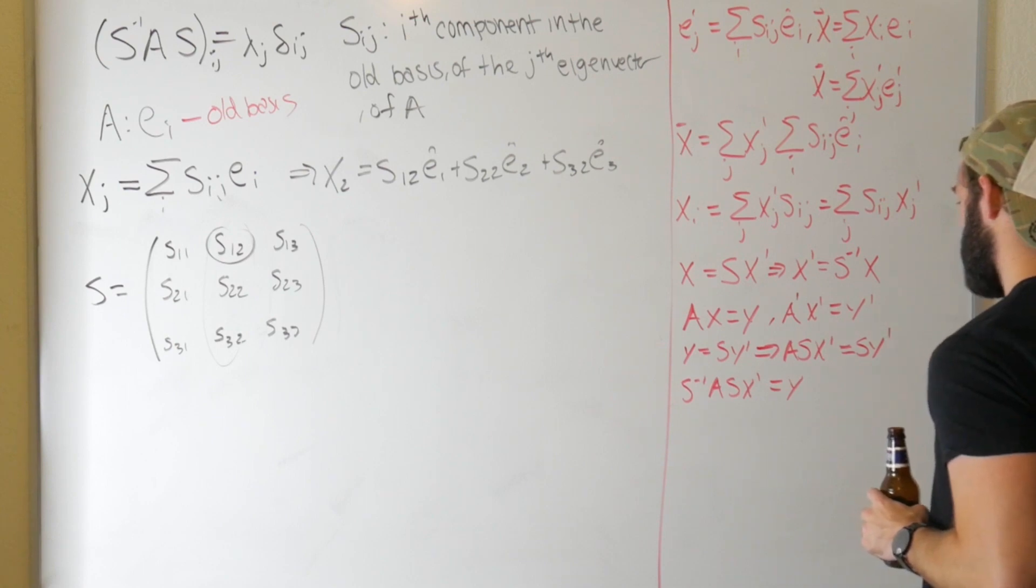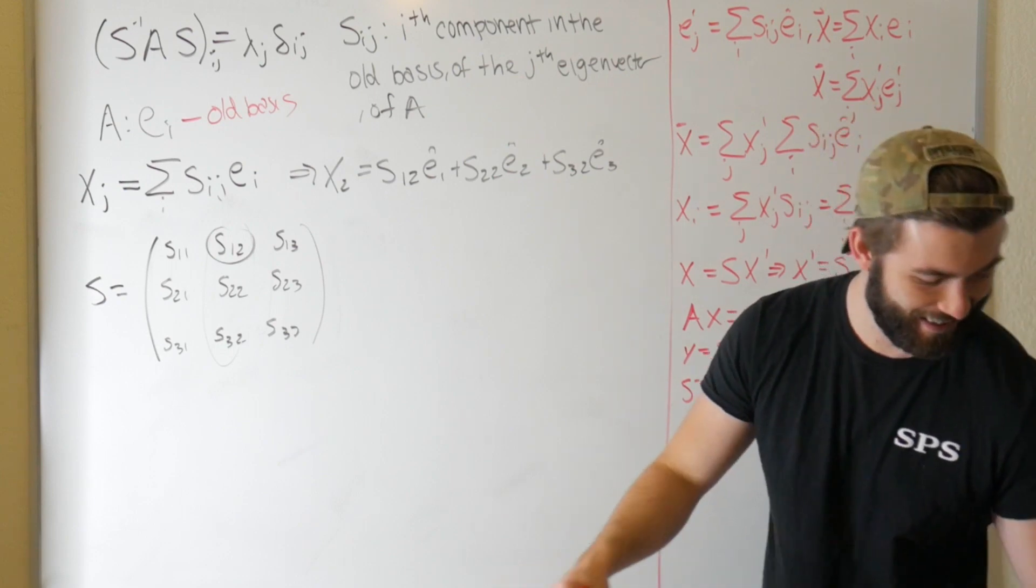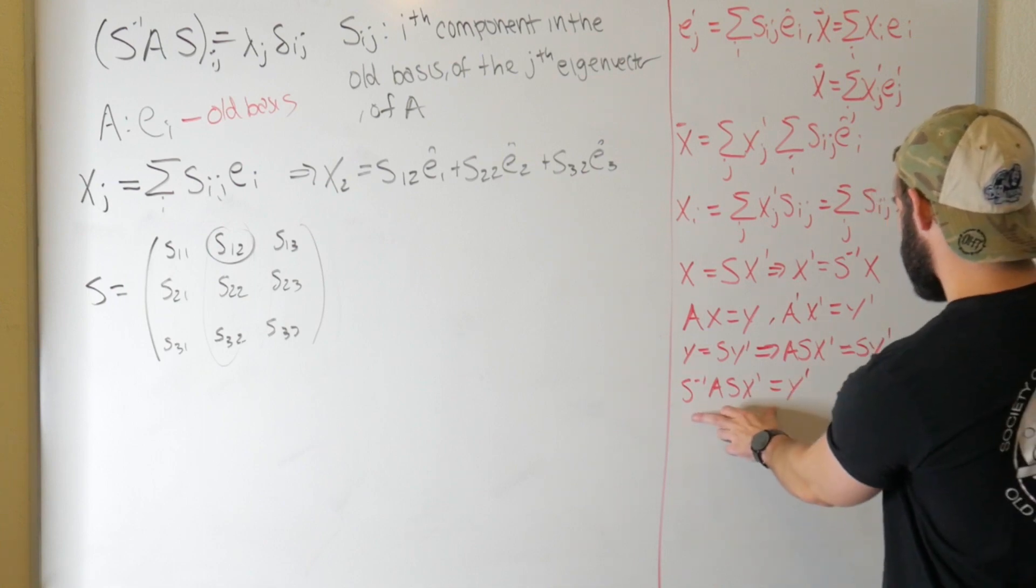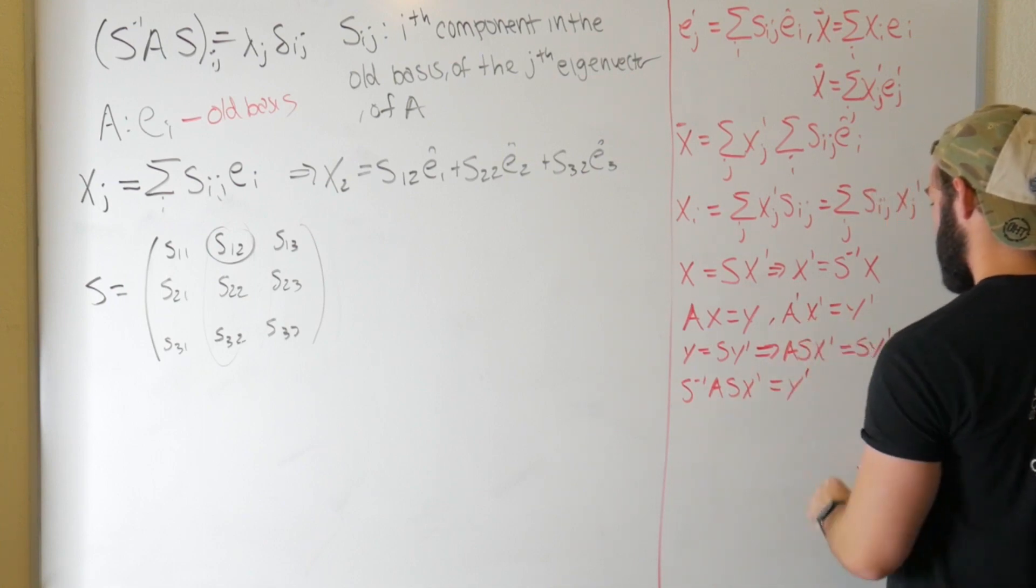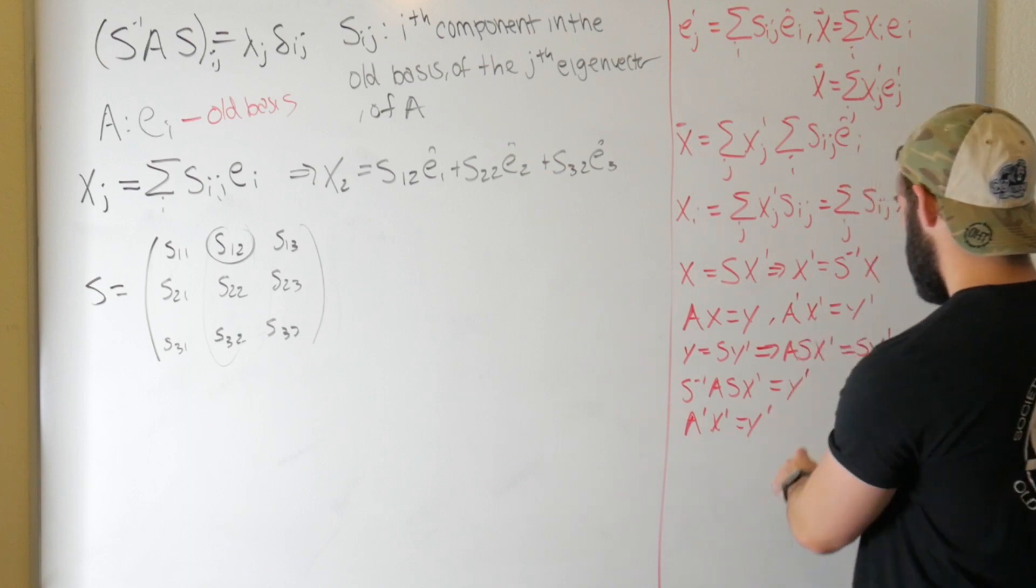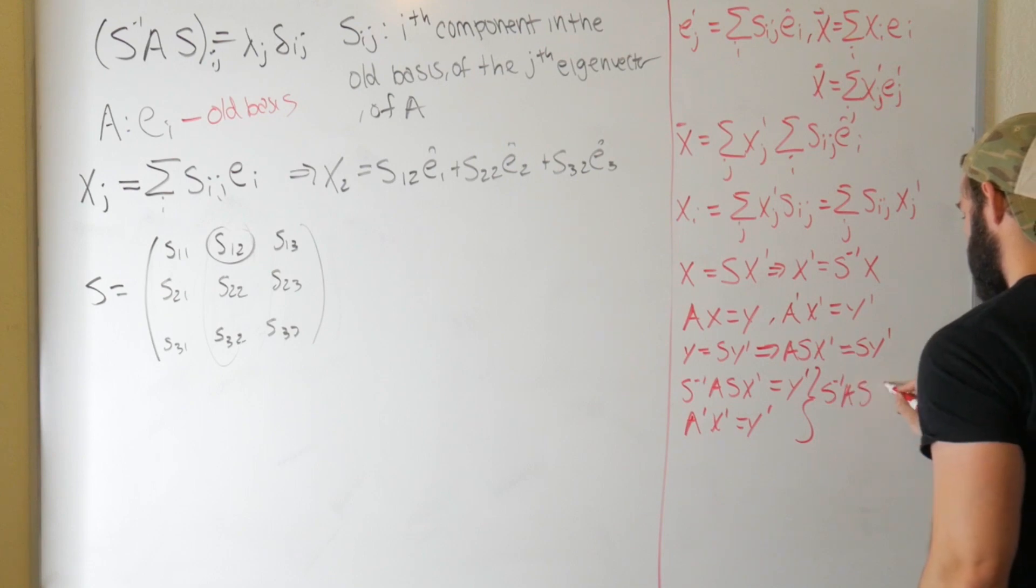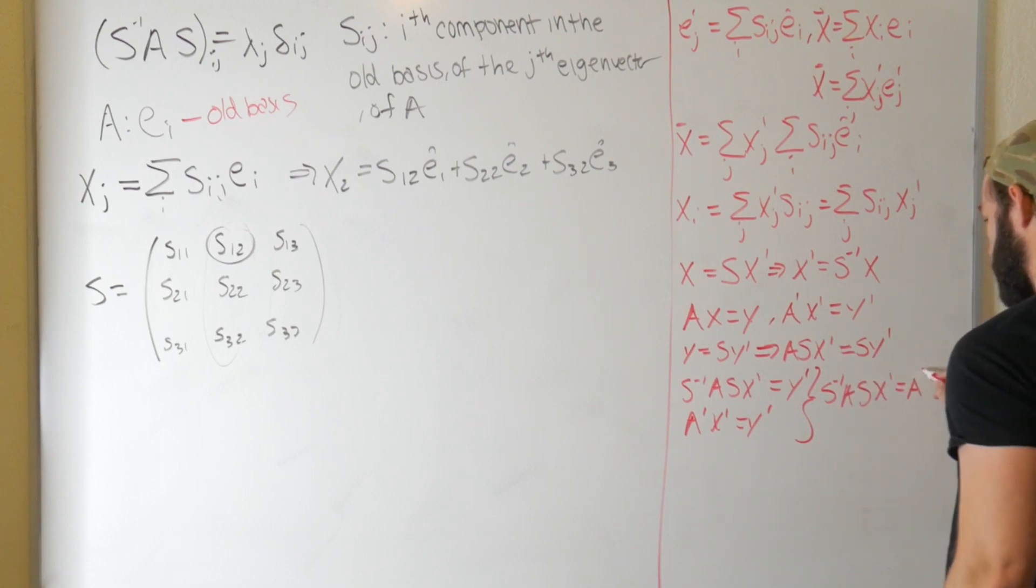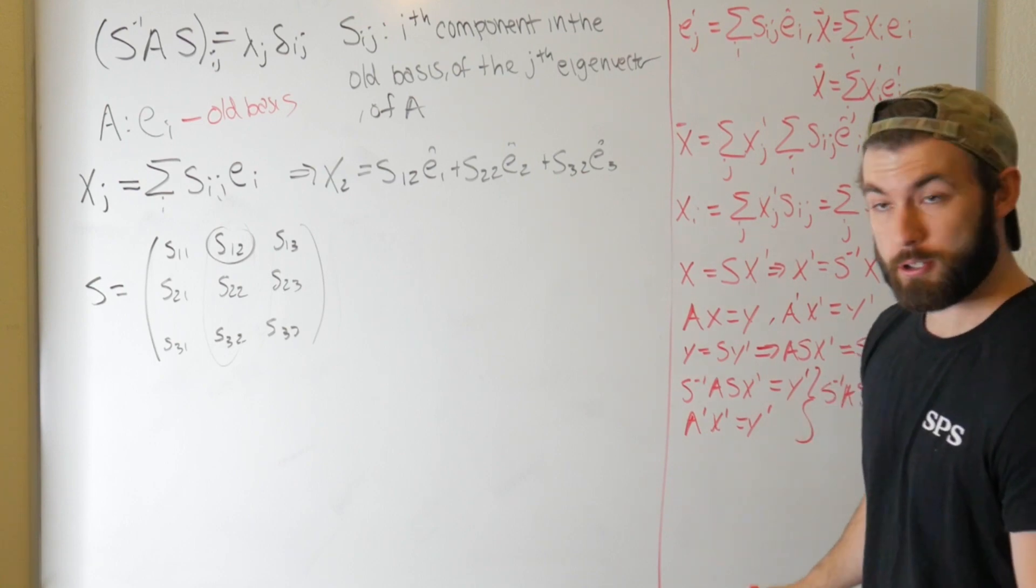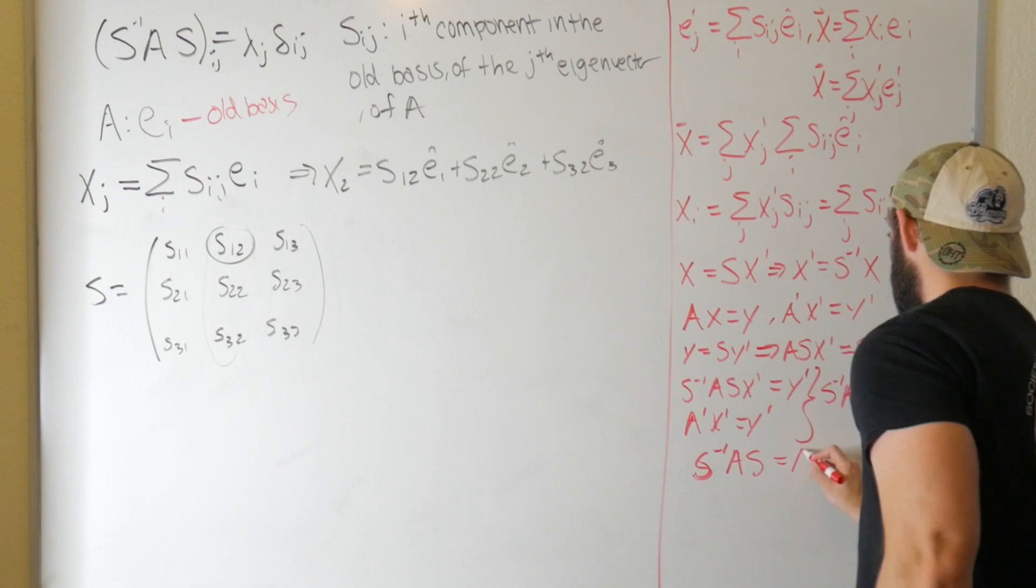So we get S inverse A S x prime is equal to y prime. Sorry about that. Okay, don't drink and drive kids. I keep messing up. This is a y prime. Okay, and then so we have this expression for y prime and then we also have this expression for y prime. So we get A prime x prime equals y prime. So these two are equivalent which means that S inverse A S x prime is equal to A prime x prime. In other words, we derive what's known as a similarity transformation. S inverse A S is equal to A prime.